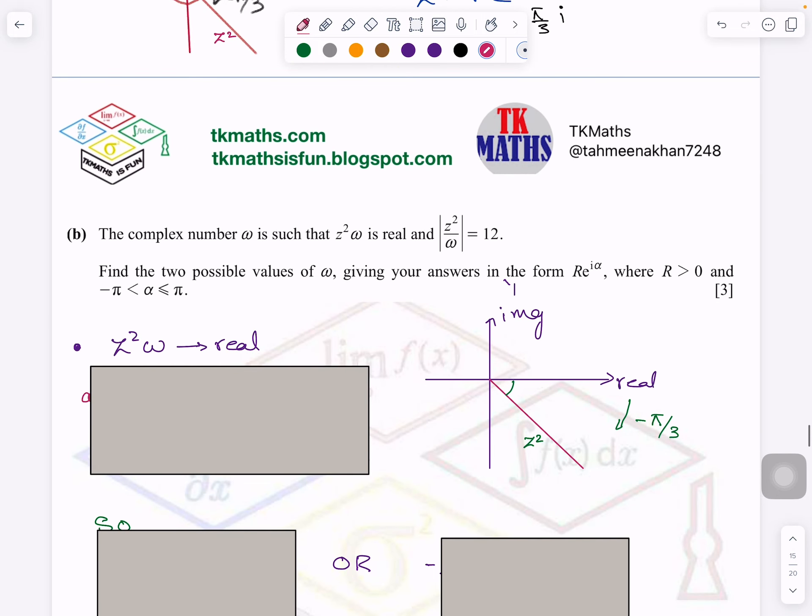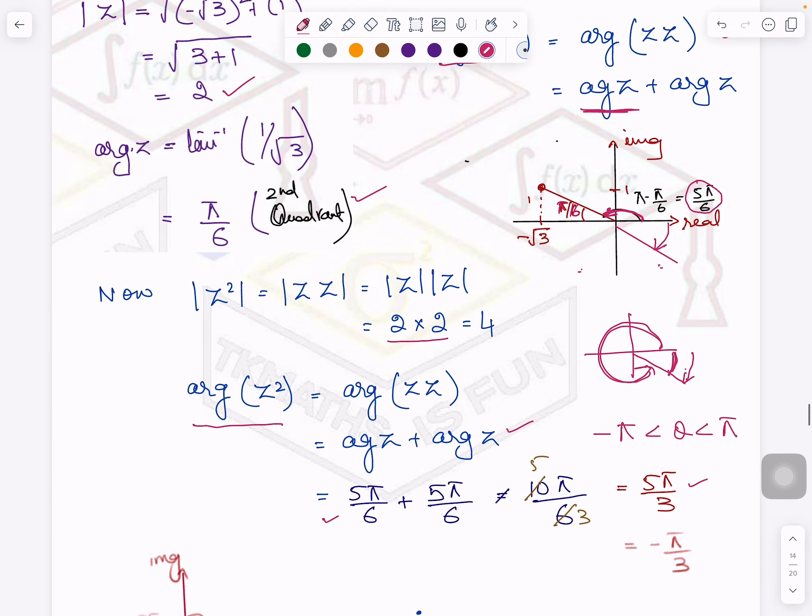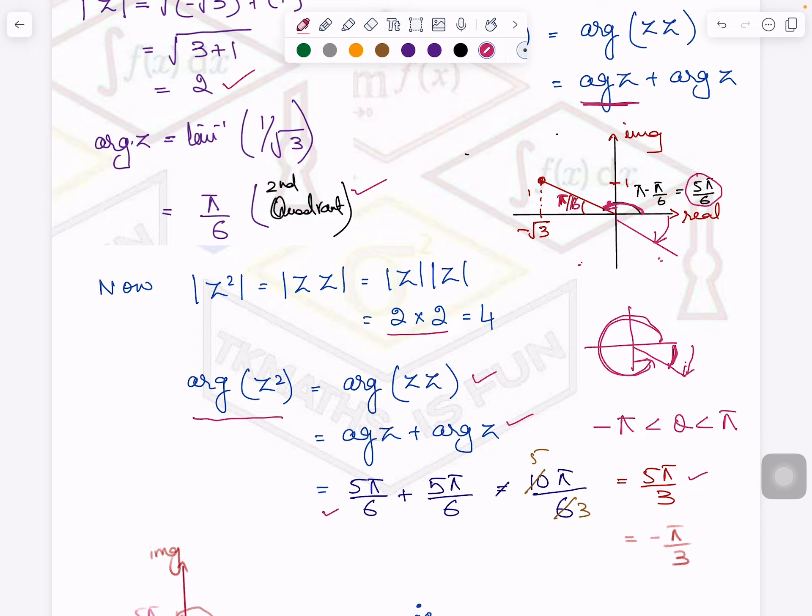Now let's see this part. This is very interesting. The complex number ω, by the way, this W in Greek language is called omega. Omega is such that Z square ω is real. Now the hint is all given here in this one. You know, again, this is giving me the concept of what? I have just discussed with you here, Z times Z, this concept.